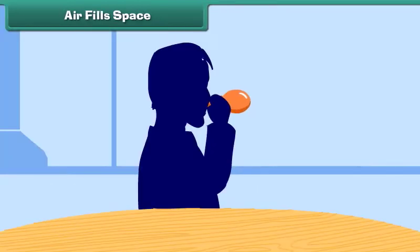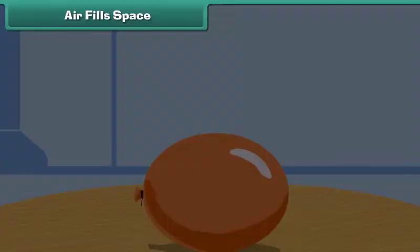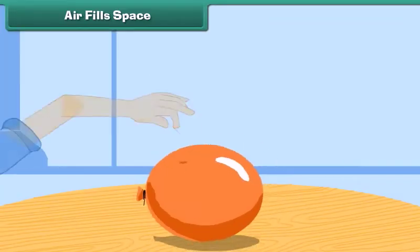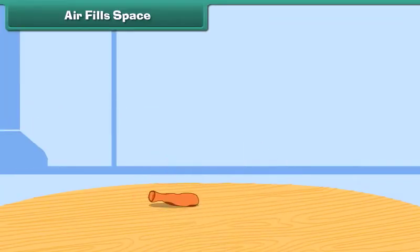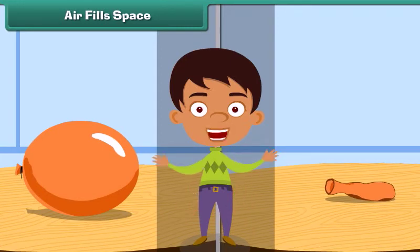Air fills space. Take a balloon and blow air into it — the balloon expands in size. Now prick the balloon with a pin. The air inside the balloon escapes through the hole and the balloon becomes flat. This proves that air fills space.